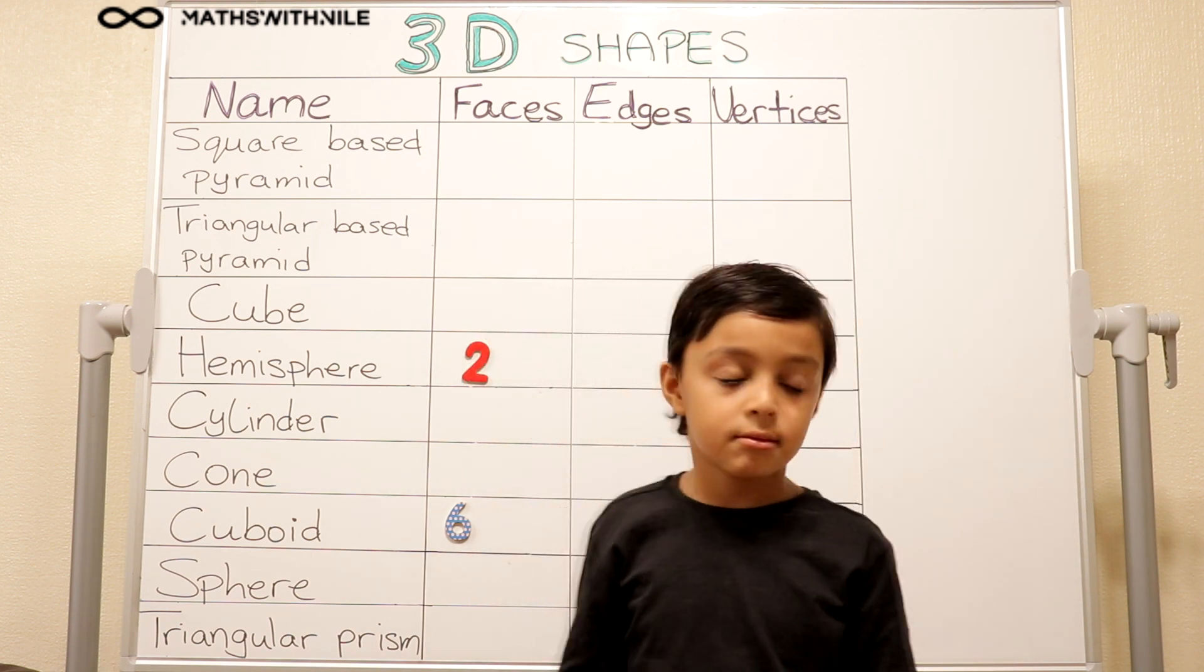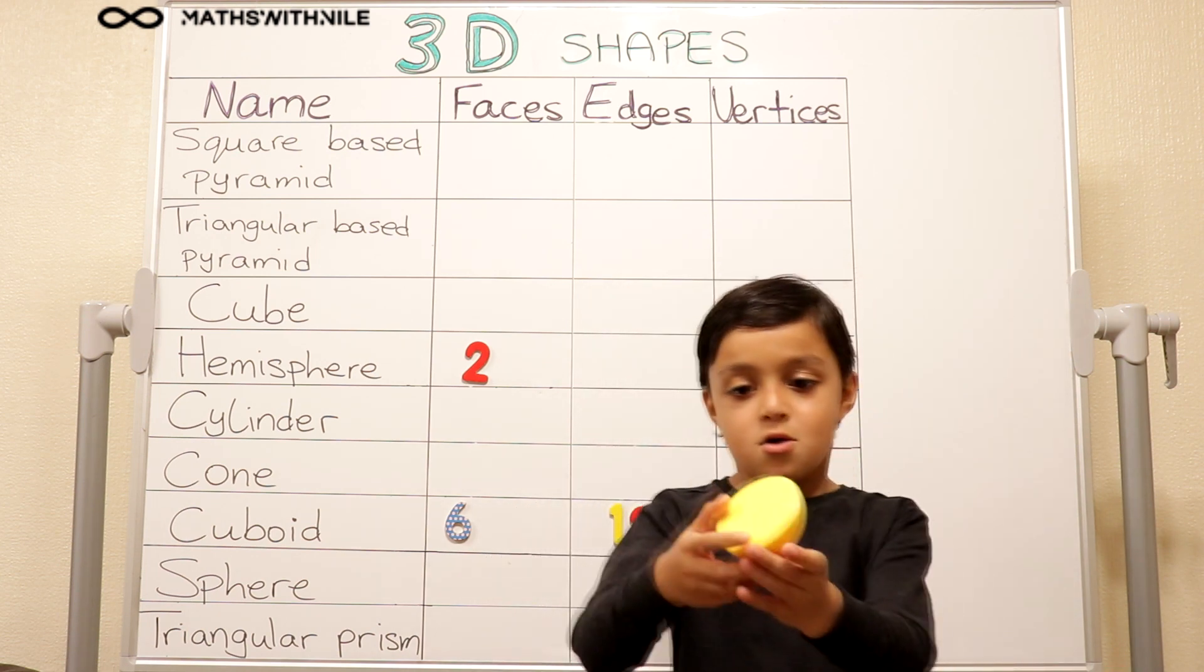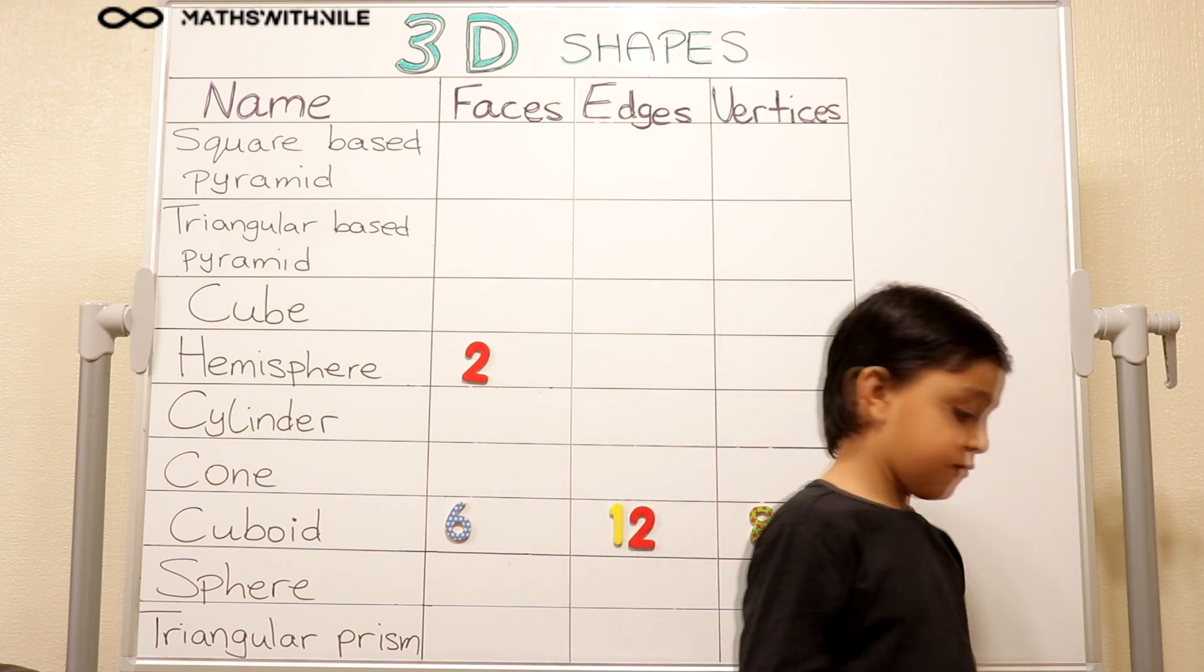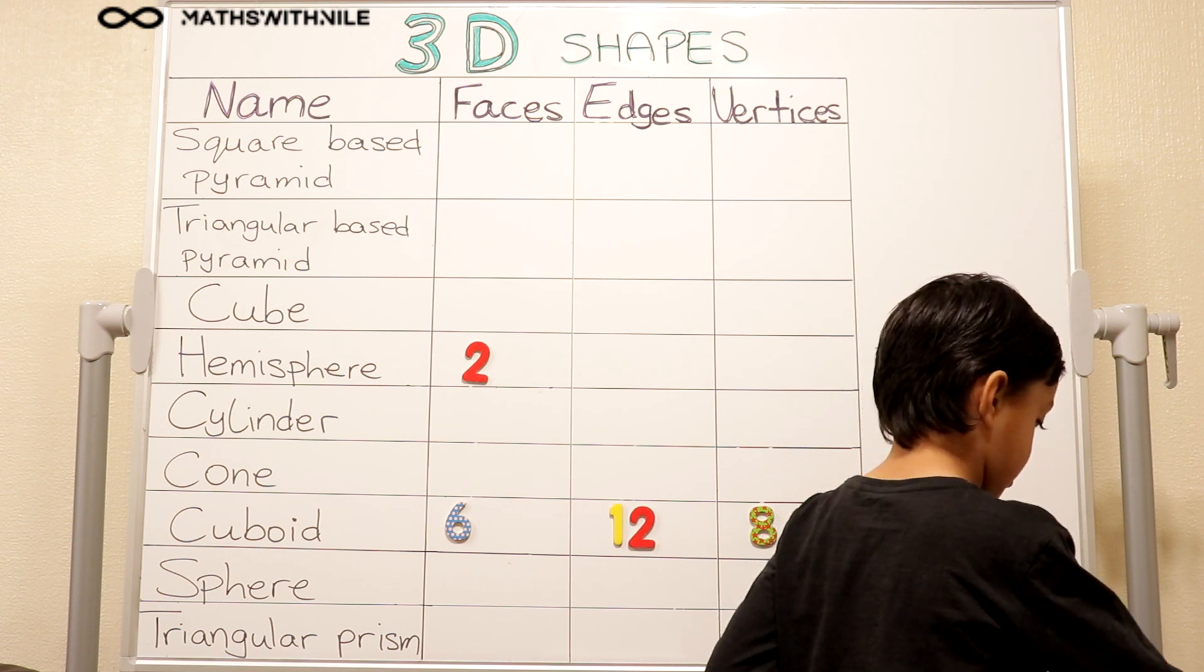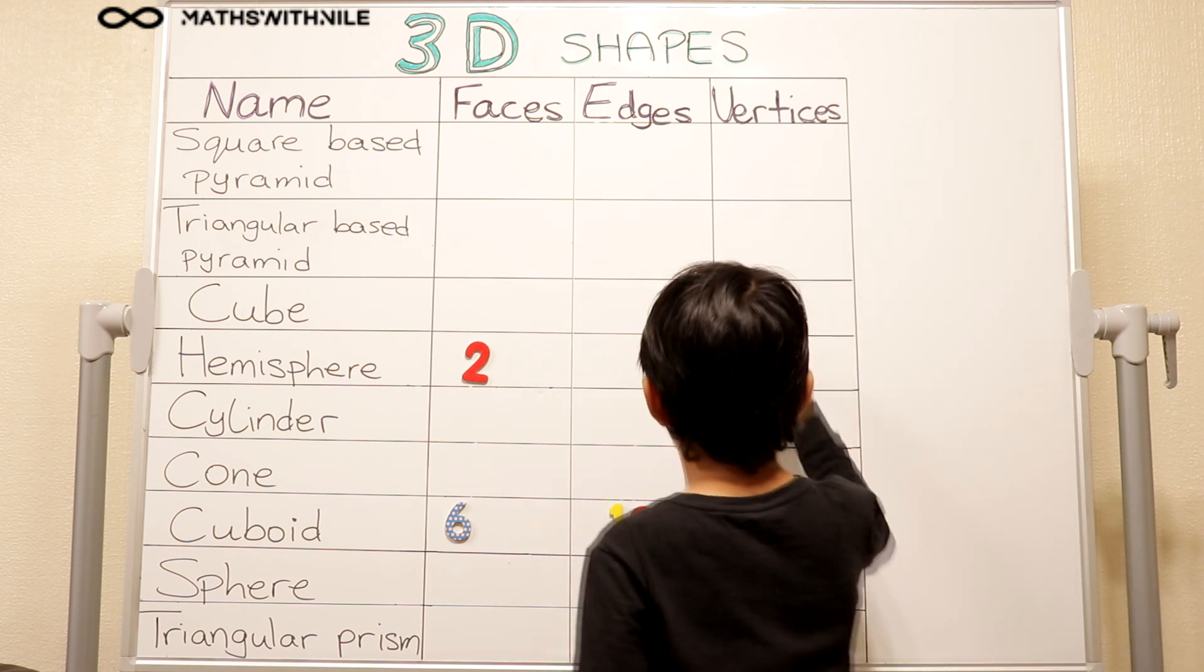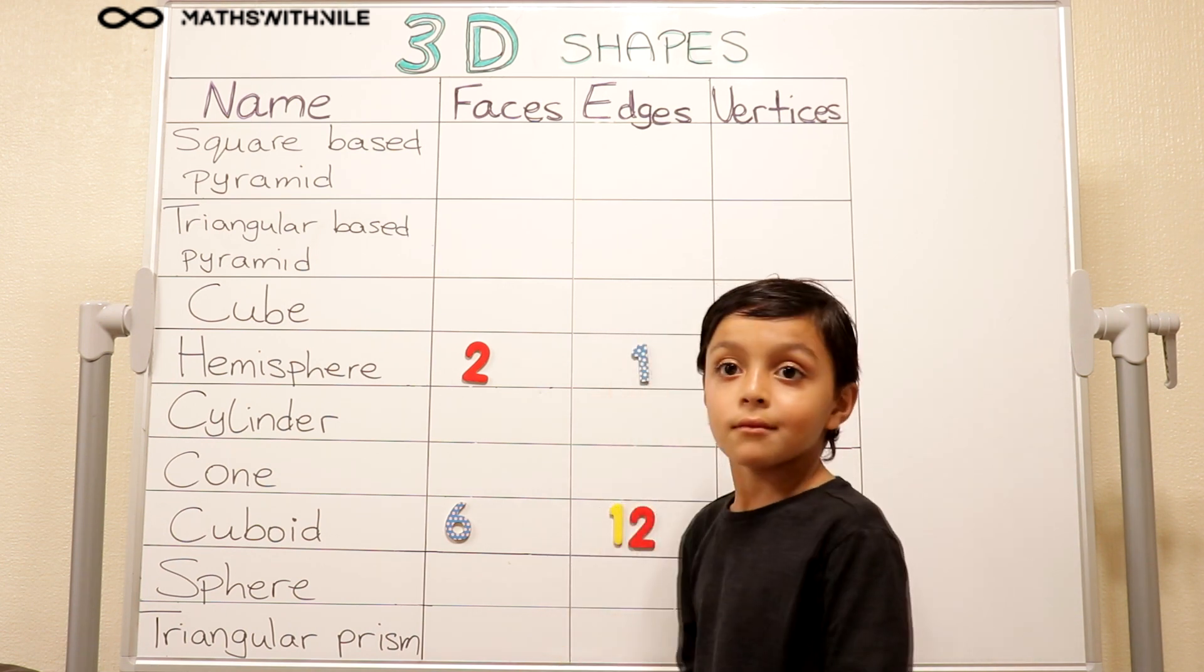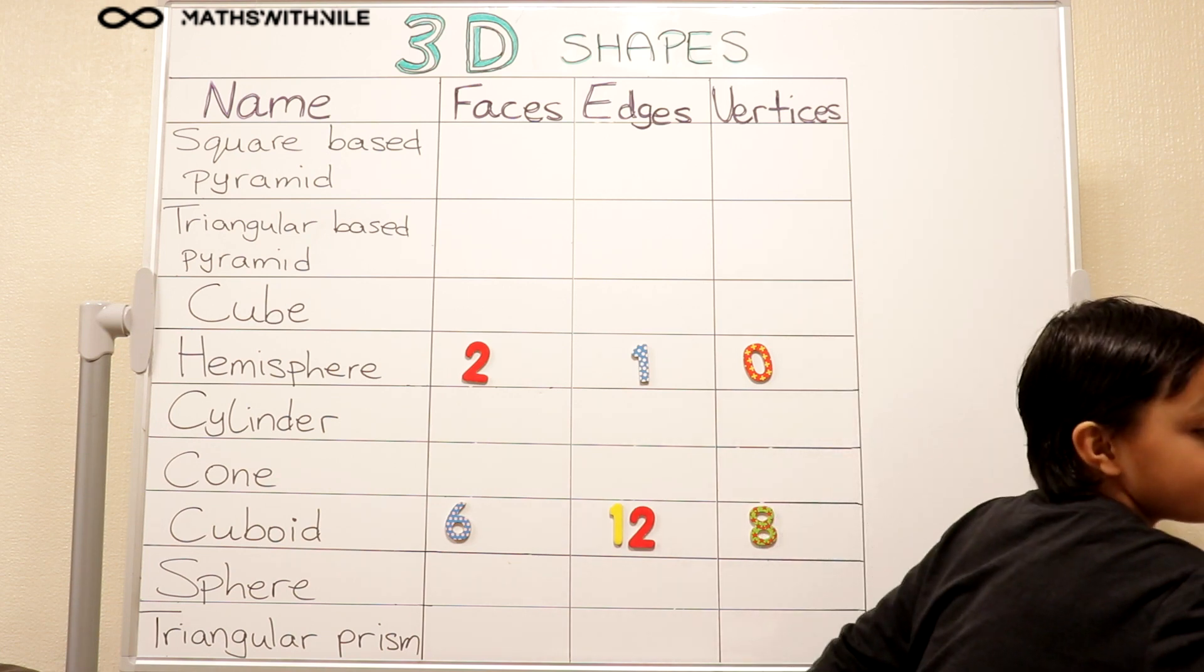So you want to find a hemisphere on the board and put two faces. And how many edges does it have? Can you show us? One. One edge. And how many vertices? Zero. Zero vertices because there are no points.